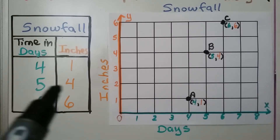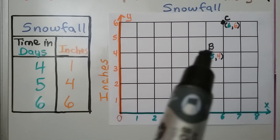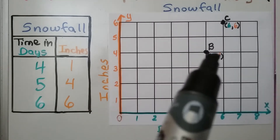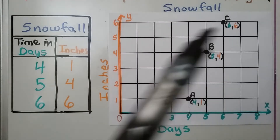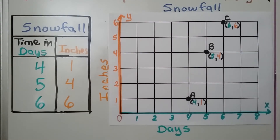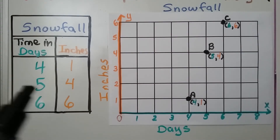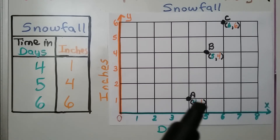Day five had four inches, so on day five we have it at four inches. Day six was six inches, so on day six we have it at six inches. We can see the ordered pairs of four-one, five-four, and six-six.